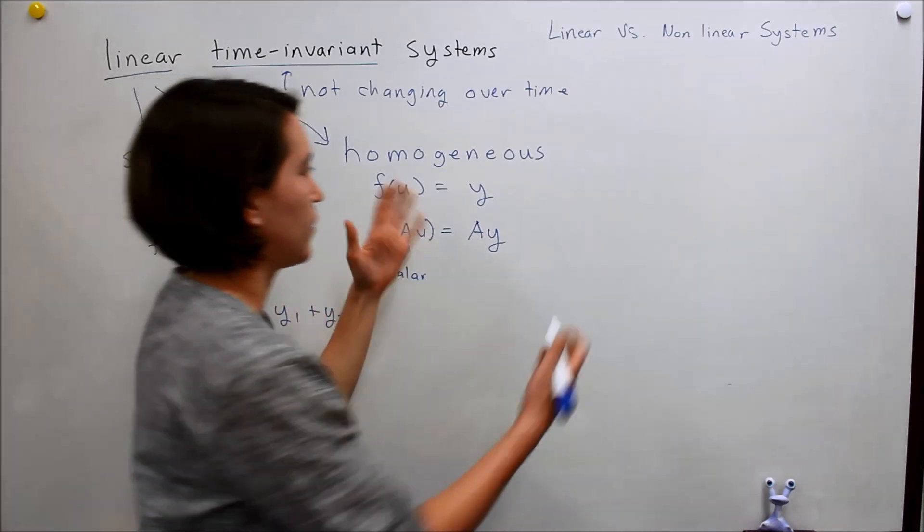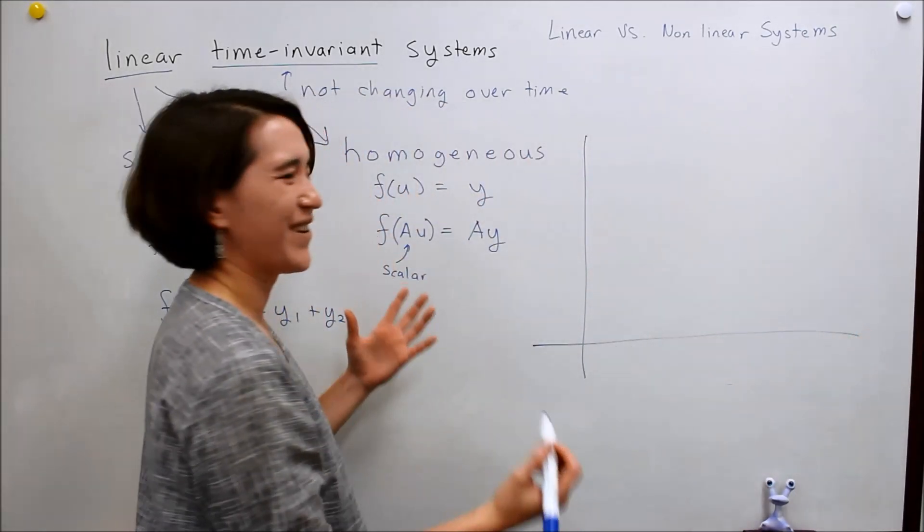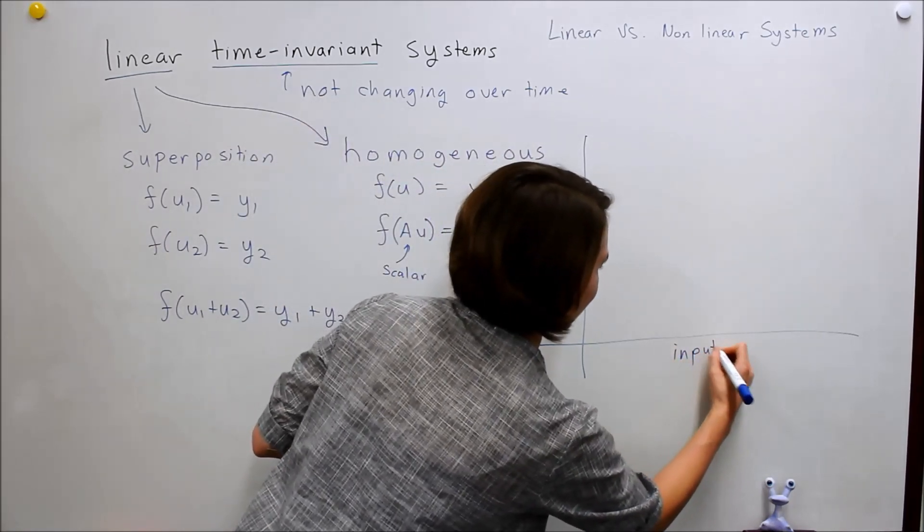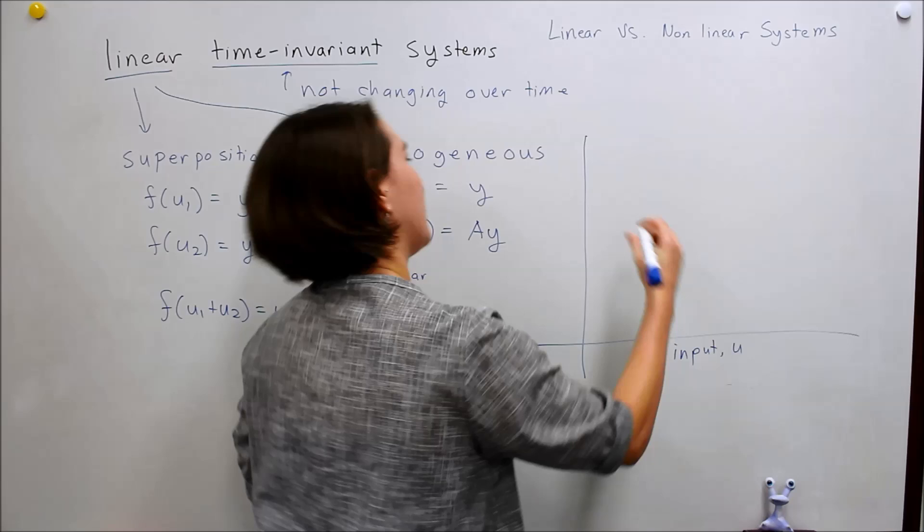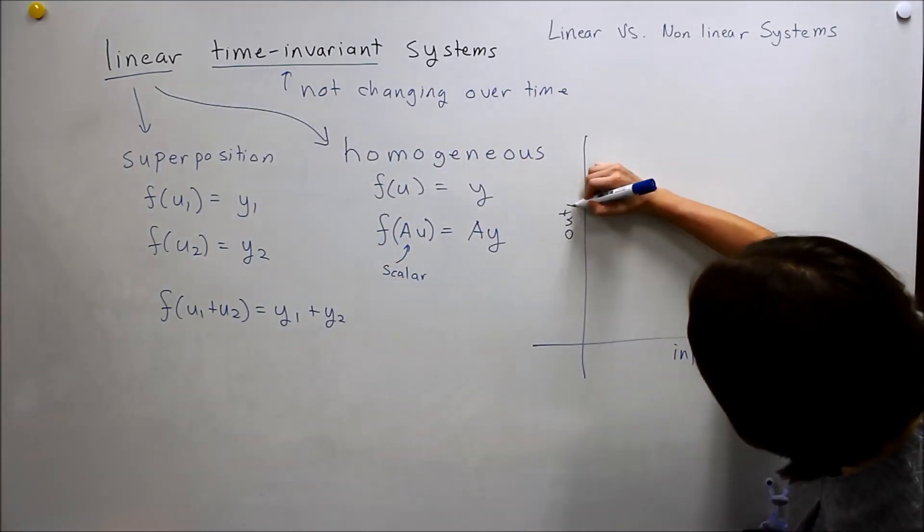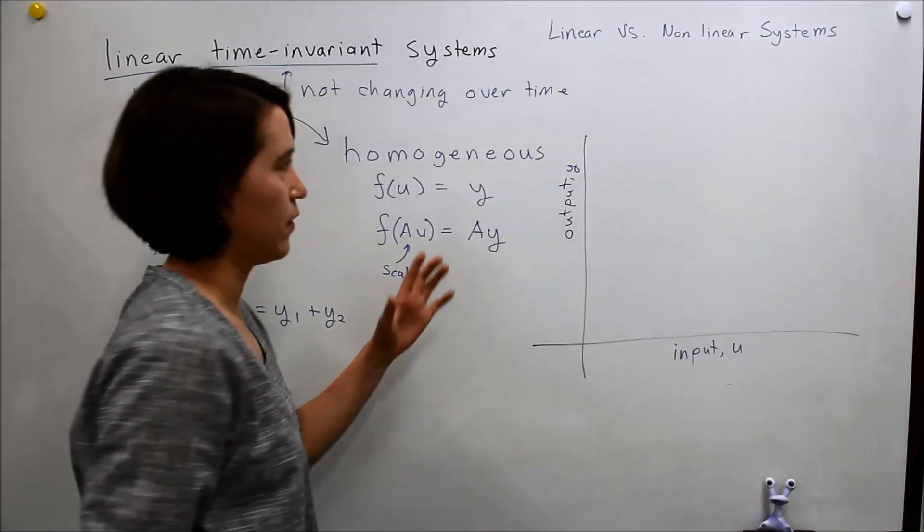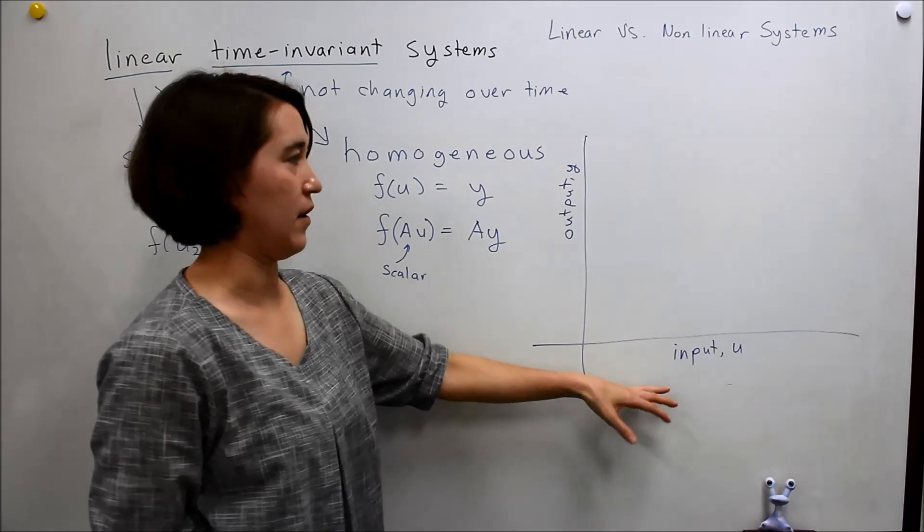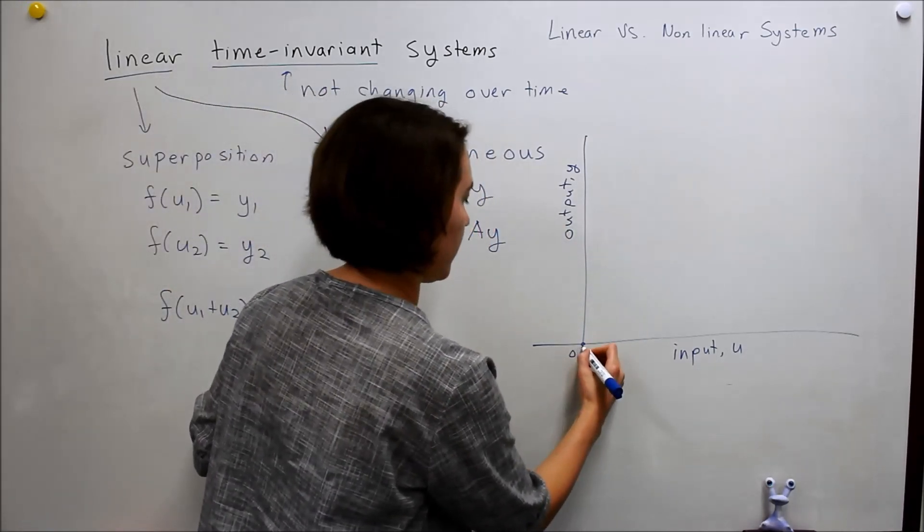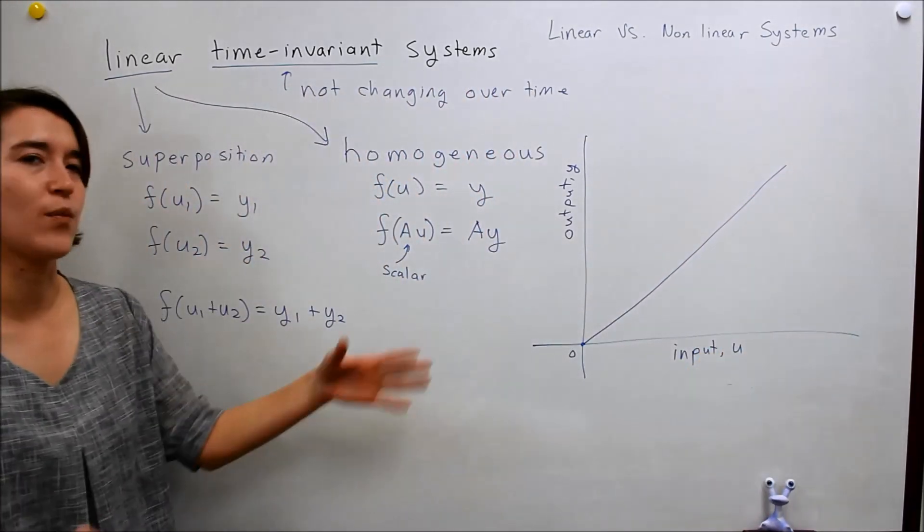And what this looks like if you're more of a graphical person, then we can think about it like this. So, we have our input here, u, and let's put the output here. It's y. What this means for a graph of input versus output, and here is 0...